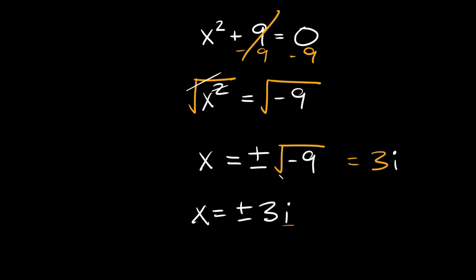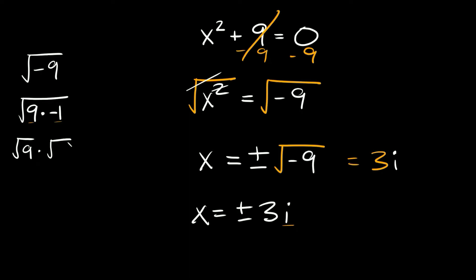Just in case you're wondering where i is actually coming from, let's work through the square root of negative 9 on the side. You'd first want to separate the number from the negative sign, so write it as the square root of 9 times negative 1. Then split them into their own radicals: the square root of 9 times the square root of negative 1. The square root of 9 is 3, and the square root of negative 1 is defined as i. i is always equal to the square root of negative 1 — specifically the square root of negative 1. So that's where i comes from. The shortcut: just take the square root of the number and tack on the i at the end. So x equals plus or minus 3i.